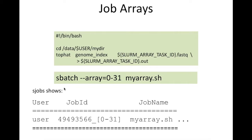If you run sjobs, this is what a job array would look like. It would have a single job ID, underscore, and the starting and ending index of the array — 0 to 31 in this case.